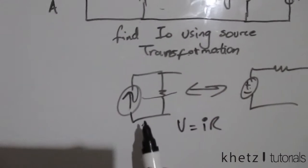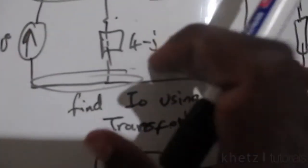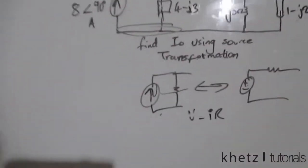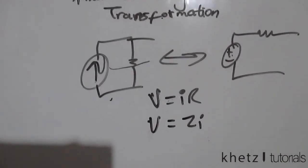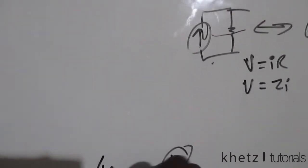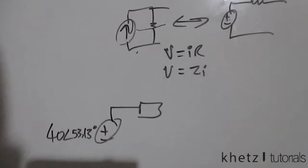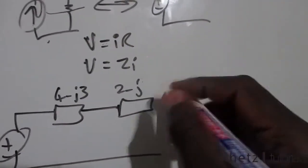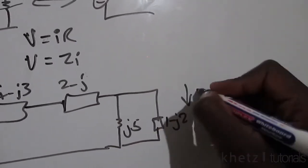So now we have a configuration where we have a current source in parallel — they share two nodes — with this impedance. We can use Ohm's law: V equals Z multiplied by I. Multiplying these two, we get a voltage source of value 40 at an angle of 33.13 degrees. That same impedance value of 4 minus j3 is now in series with the one at the top, which has a value of 2 plus j. Then we have j5 and the impedance 1 minus j2, with I_O still indicated there.